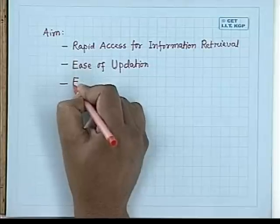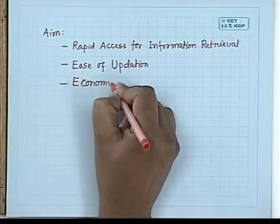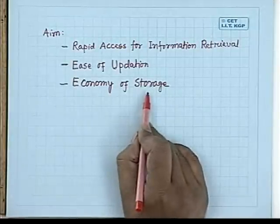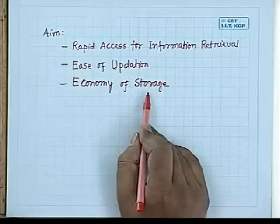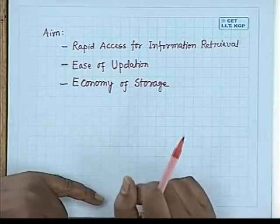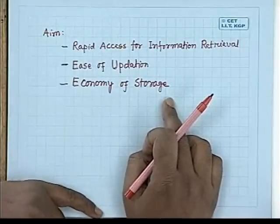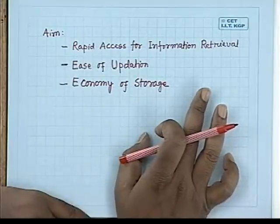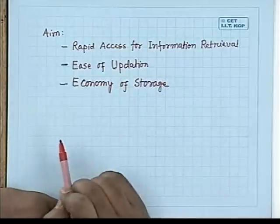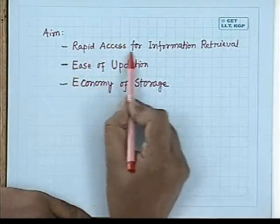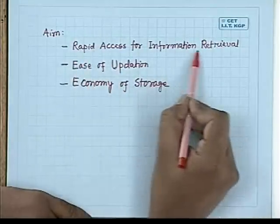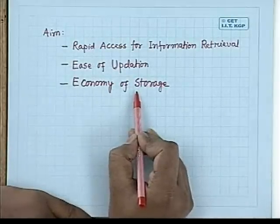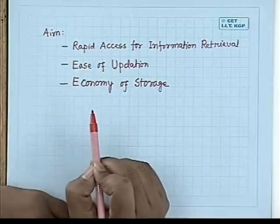Another objective is economy of storage — there should not be much redundancy in the data file. If data is redundant or extra information is put in the data file, storage requirements increase. Our structure should be such that storage is used economically. However, this is a contradicting requirement: rapid access for information retrieval requires redundant information, whereas the economy of storage requirement says there should not be much redundancy. These two requirements are contradicting.